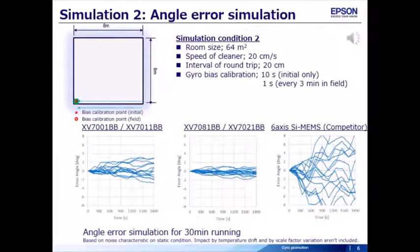This page shows also the angle error simulation for 30 minutes continuously running robot vacuum cleaner. The only difference from the previous page is the gyro bias calibration method. The gyro bias was calibrated every 3 minutes, not just the initial calibration before running.